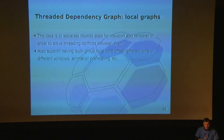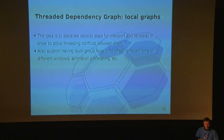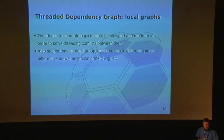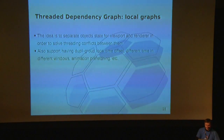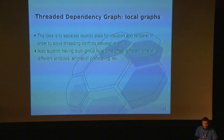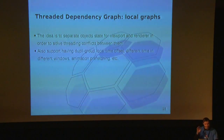After this was done, it leads us to local graphs. The idea is to separate the state of objects between render and viewport. Depending on constraint and modifier settings, an object might be in one position for the viewport and another position for rendering. This is not possible with the current design, and local graphs aim to solve this. It will also allow duplicate group local time offset, different time in different windows, and animation pre-fetching.